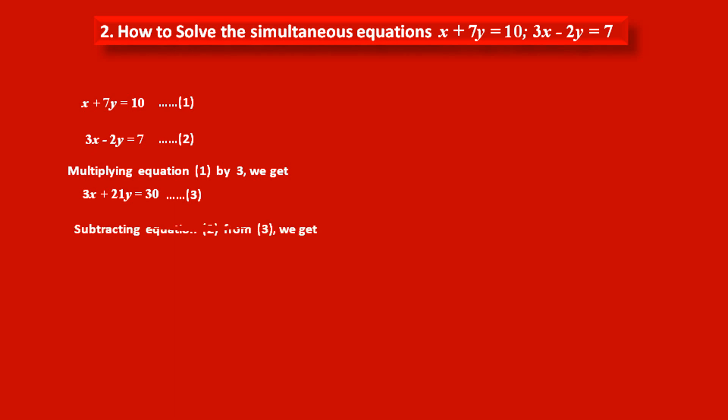So, subtracting equation 2 from equation 3, we get, first we have to write equation number 3: 3x plus 21y equals 30. Minus, to do subtraction, we have to write equation number 2 as 3x minus 2y equals 7. Because of subtraction, we have to change sign of all three terms of the second equation.